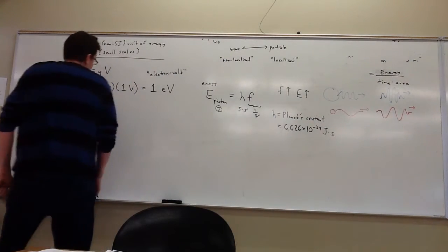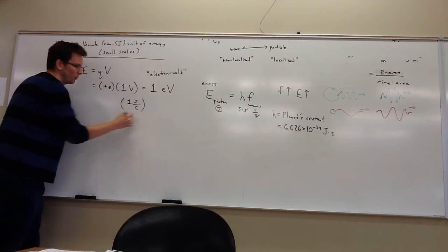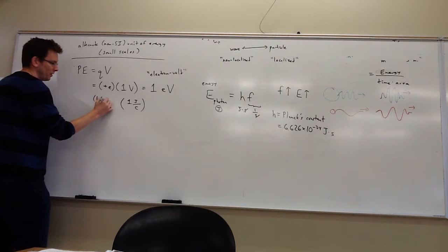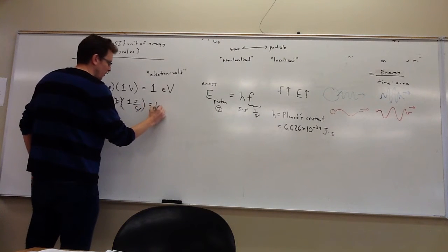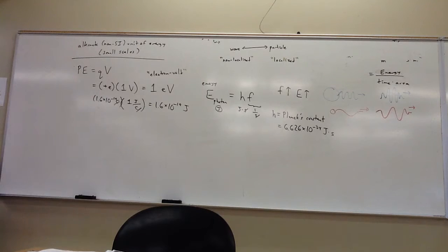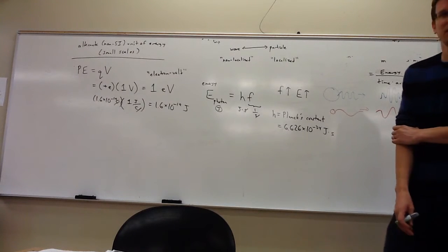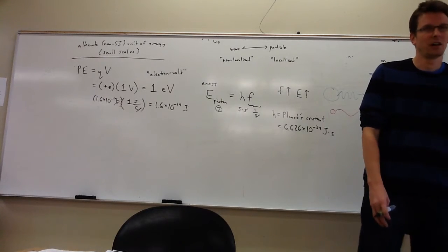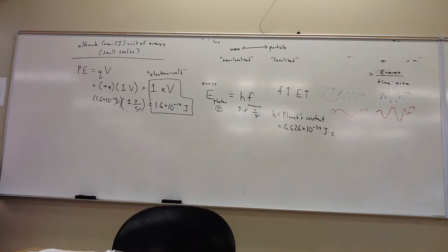One volt is one joule per coulomb, and the elementary charge is 1.6 times 10 to the minus 19 coulombs — the coulombs cancel, so the amount of energy here is 1.6 times 10 to the minus 19 joules. So 1 eV is actually the same amount of energy as 1.6 times 10 to the minus 19 joules. You can see that for small bits of energy, this is going to be a much easier unit to use. When we're at the 10 to the minus 19 joule range, we're in the 1 range on the eV side.